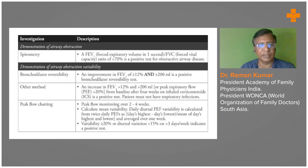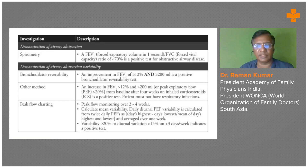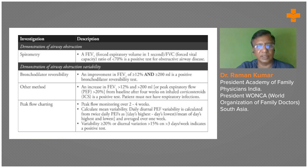Peak flow charting is important. Ideally in full-time asthma practice we should maintain all these investigations in our clinic. Patients sometimes get relief without them, but having these standards and facilities available is useful. Monitoring over two to three weeks and looking at variations can give a good idea of asthma severity, whether the patient needs referral, and what level of treatment is required. Even a single spirometry evaluation can be very informative.